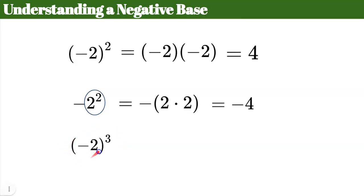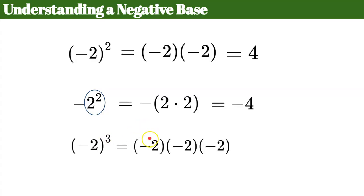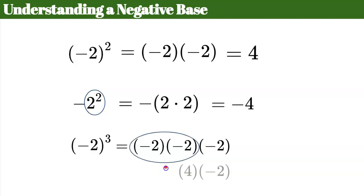For (-2)³, the base is negative 2 and we multiply it three times: -2 × -2 × -2. Start with the first two: -2 × -2 = positive 4 (same sign). Then 4 × -2: different signs, so the product is negative 8. So (-2)³ = -8. Think of it this way: an odd number of negative bases gives a negative product; an even number gives a positive product.